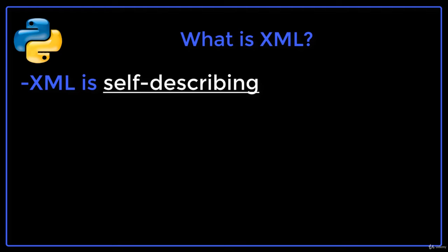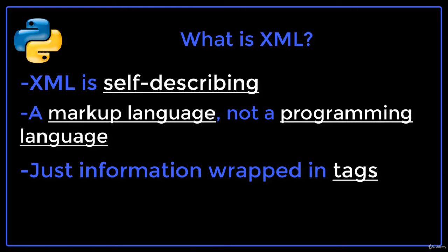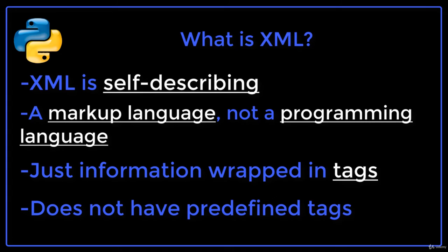XML is self-describing. It is also worth noting that XML is considered a markup language, not a programming language. Unlike programming languages, XML doesn't do any computations. It is simply information wrapped in tags. One important point to note is that XML does not have predefined tags — it is up to the developer to invent the tags that describe the data for the application they are building.